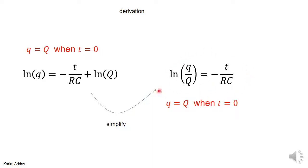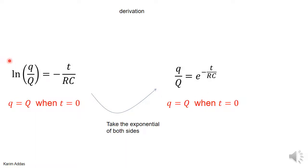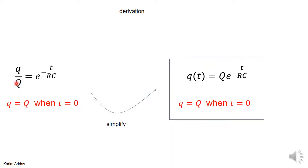And of course the next step is to take the exponential of both sides. So if you take the exponential of both sides, e to the power ln(q/Q) is just q/Q, and then e to the minus t/(RC) is there.